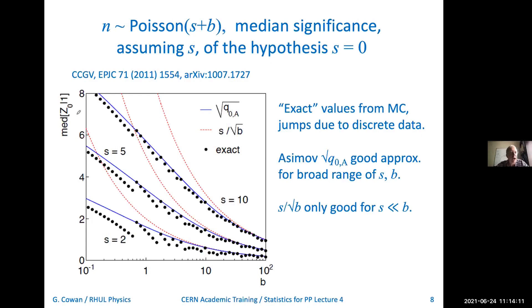I'll call that z sub A for the Asimov estimate — it actually turns out to be a better estimate for the median rather than the mean, but that's a technical point. Now, what's interesting about that formula: if you expand the logarithm and expand the whole thing in a Taylor series, you will see that this reduces to s over the square root of b in the limit where s is small compared to b, so there is that point of contact. Here's a sketch of a plot of the expected significance as a function of b for three different values of s: s equals 2, 5, and 10.